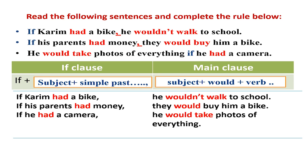Notice the last sentence: 'He would take photos of everything if he had a camera.' We can also start with the main clause. But notice that if we start with the main clause, we don't put a comma after it. If we start with the if clause, we put a comma after the if clause.